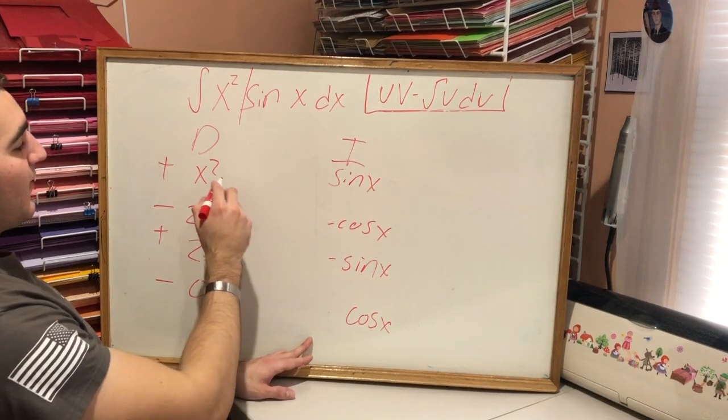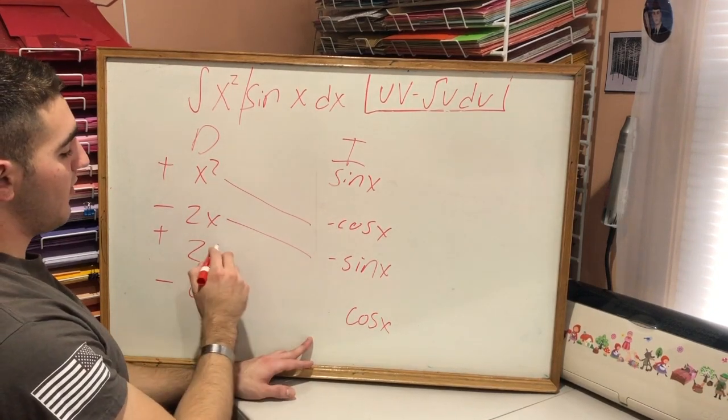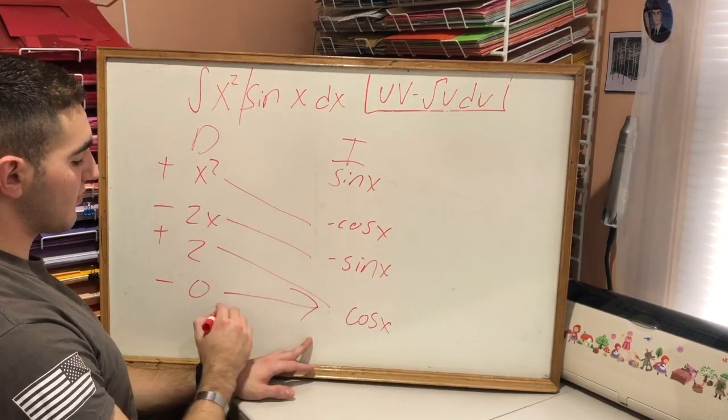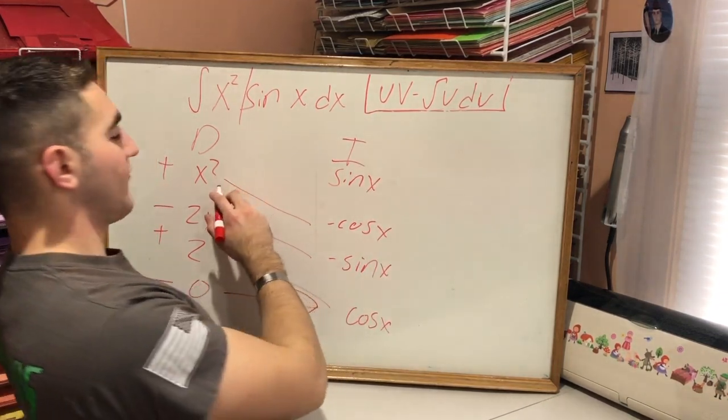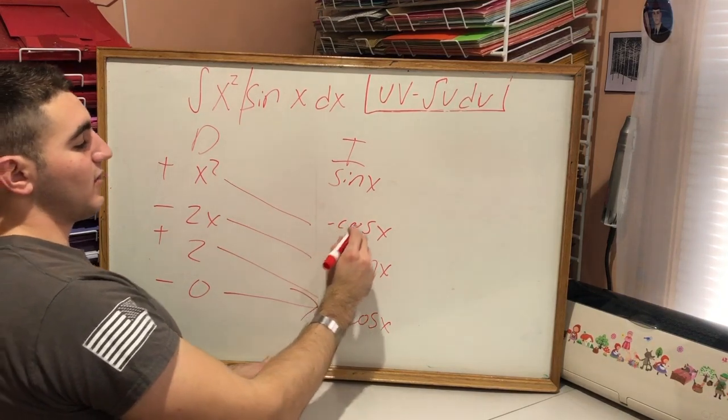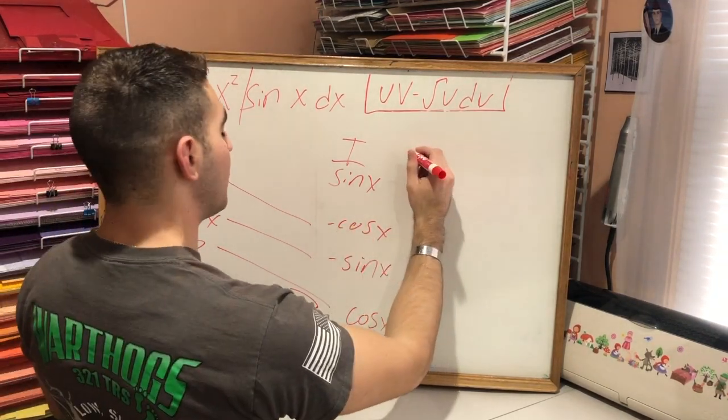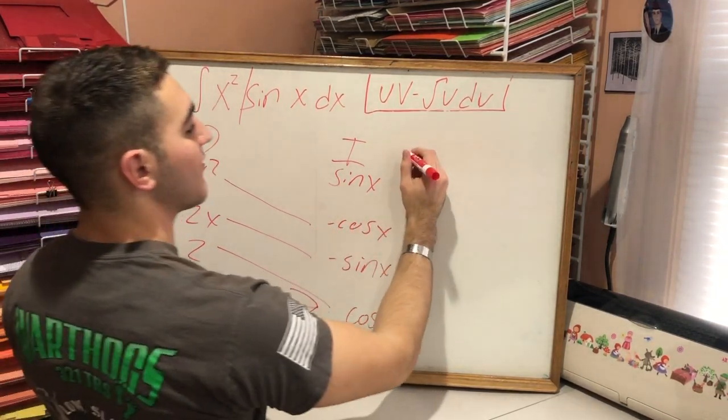Now we're going to go and cross multiply. Boom, boom, boom. Last one's zero, so it's really no term at the bottom, so the error is just like non-existent, right? Start off with this: x squared times negative cosine x, which is just going to be, first one is going to be negative.